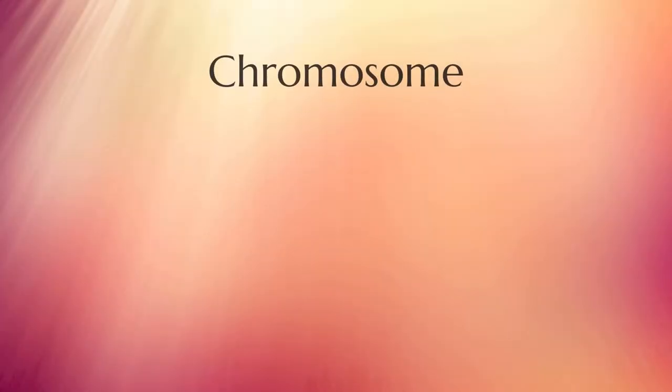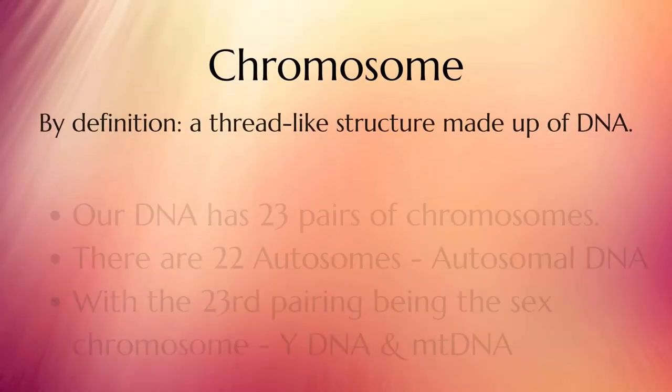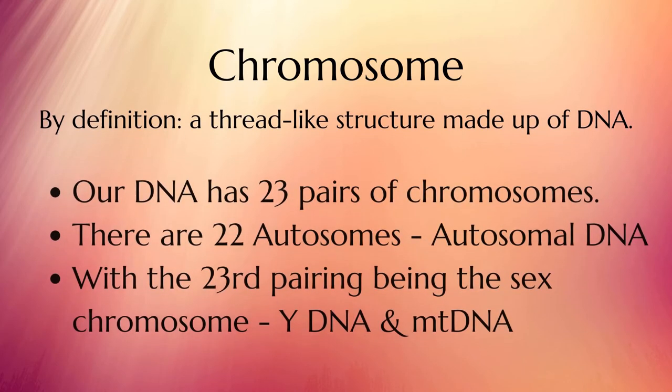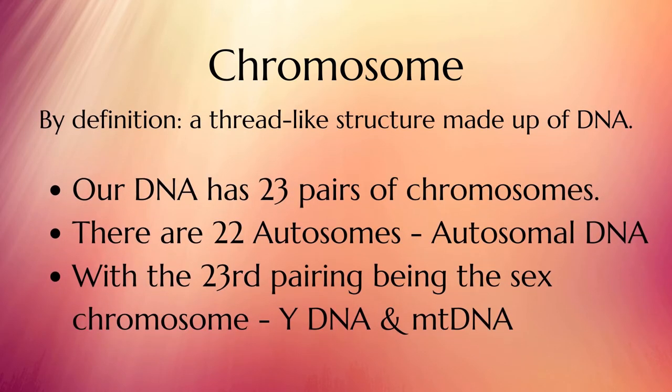Chromosome. By definition, a thread-like structure made up of DNA. Our DNA has 23 pairs of chromosomes. There are 22 autosomes, also known as autosomal DNA, with the 23rd pairing being the sex chromosome, Y-DNA, and mitochondrial DNA, you'll see abbreviated as MT-DNA.